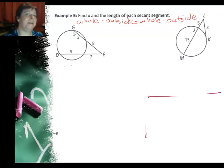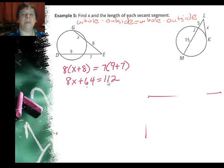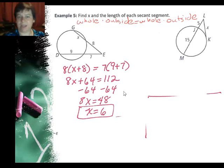So the whole is X plus 8 and the outside is 8. I'm going to actually put the 8 in front because it's easier for a distributed property. Now I'm going to say 9 plus 7 is the whole times 7. And I'm going to put the 7 in front. So 8 times X plus 8 equals 7 times 9 plus 7. Distributed property 8X plus 64 equals 16 times 7, that's 16 times 7 is 112. Subtract 64 from both sides. I get 8X equals 48 or X is 6.